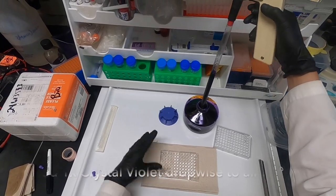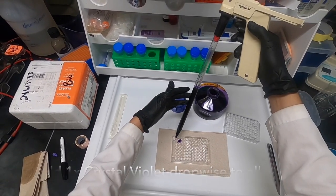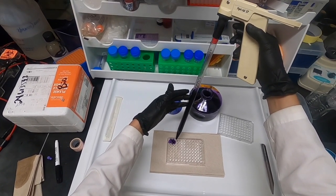We then proceed to aliquot the crystal violet stain drop wise to all wells. Be sure to work quick in order for the wells to not dry.